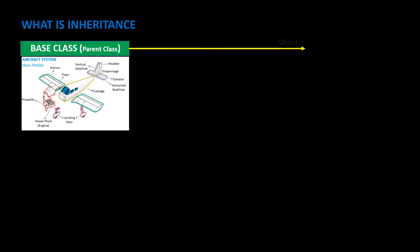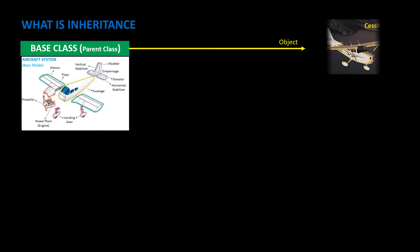Remember the aircraft system we learned as an example in the chapter on OOPs? At the most basic level we had the fundamental aircraft systems, which formed the base class. Based on these core features like the propeller, engine, wings, fuselage and tail, we manufactured a real aircraft, the Cessna. So the Cessna is an object of the base class, aircraft system.